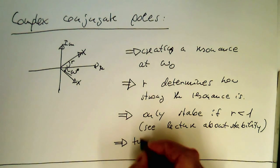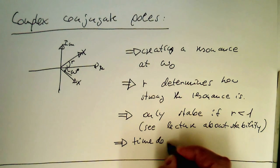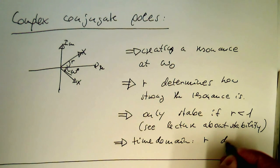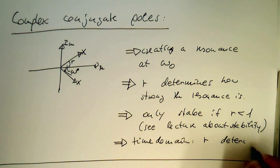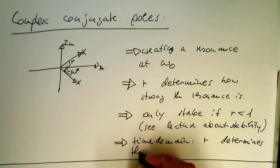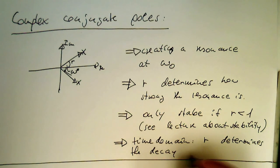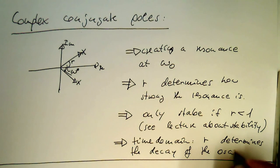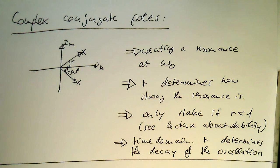And so in the time domain, R determines the decay of the oscillation. So if R is against 1, it oscillates forever. And if R is small, then the oscillation decays quickly.